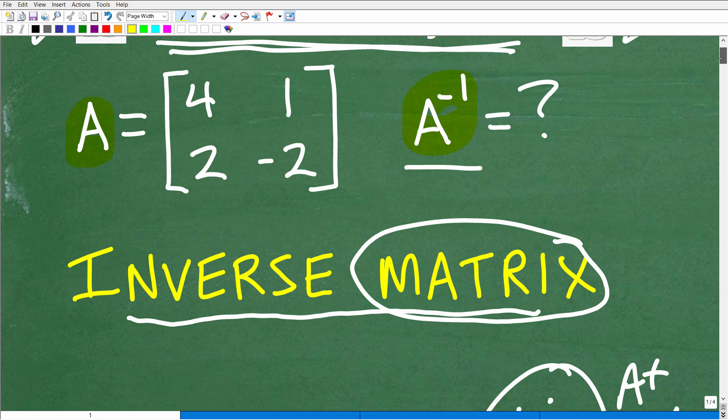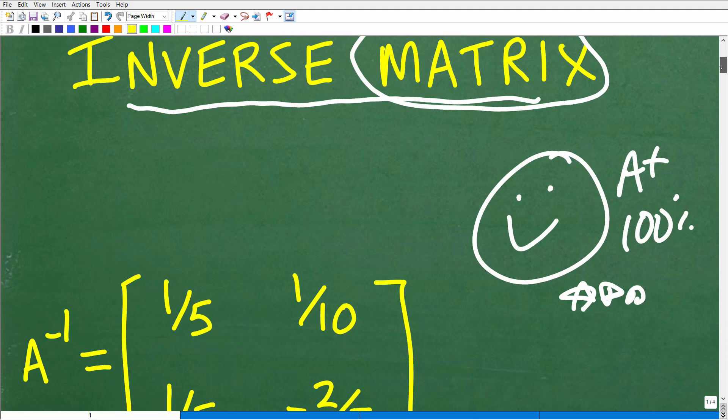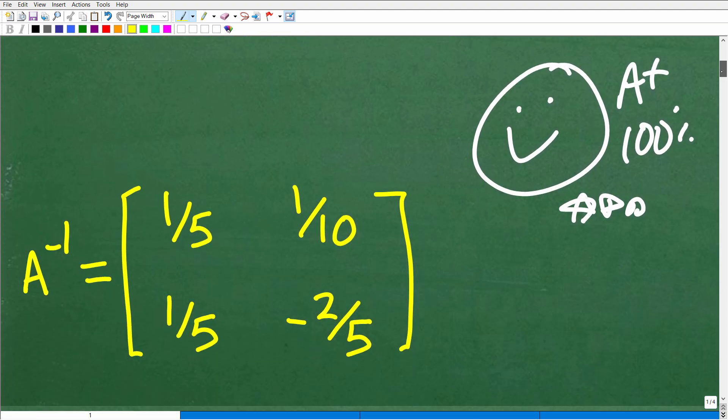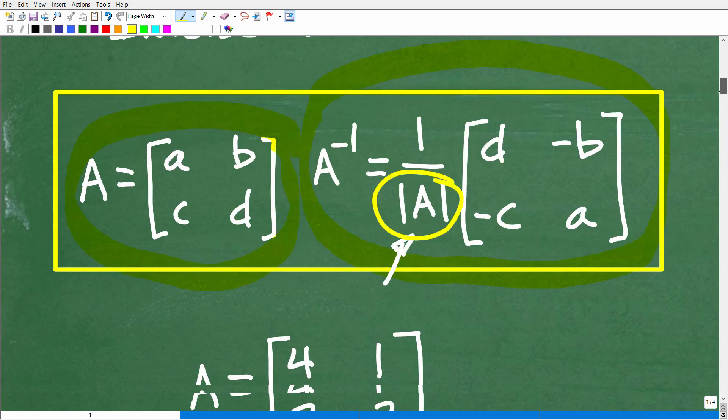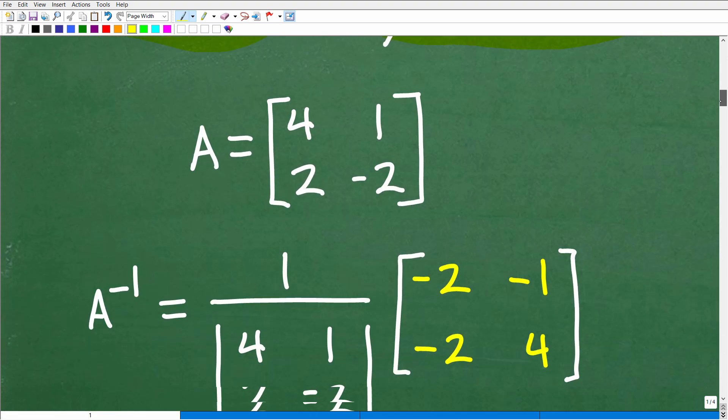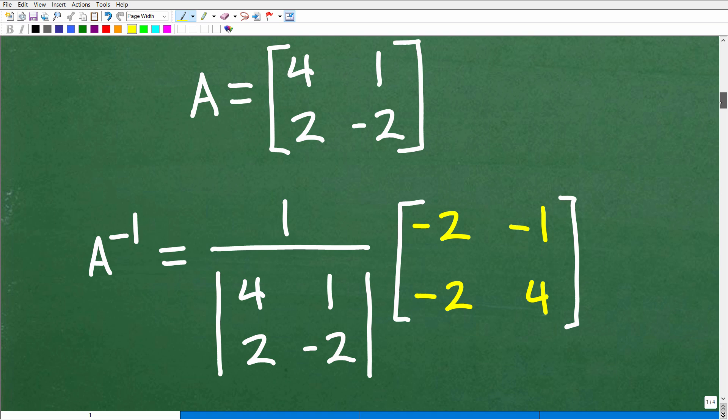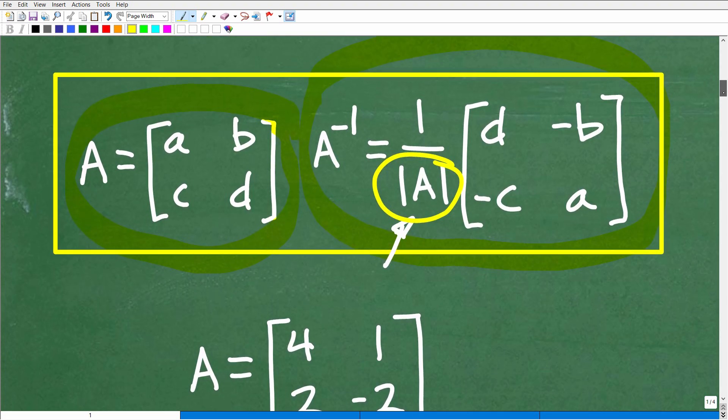Here is the matrix A, and see if you can produce this answer. Okay, so let's go ahead and get into the actual work right now. So, here is our matrix A. So, what we have to do is simply follow this formula.